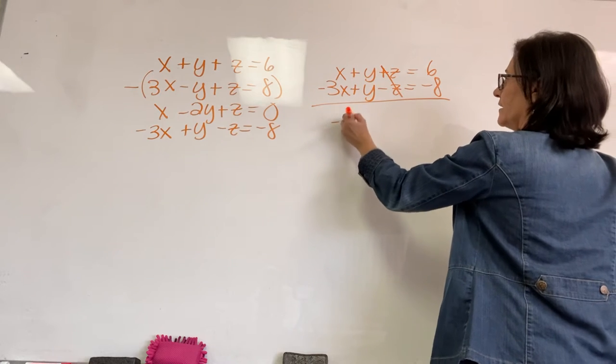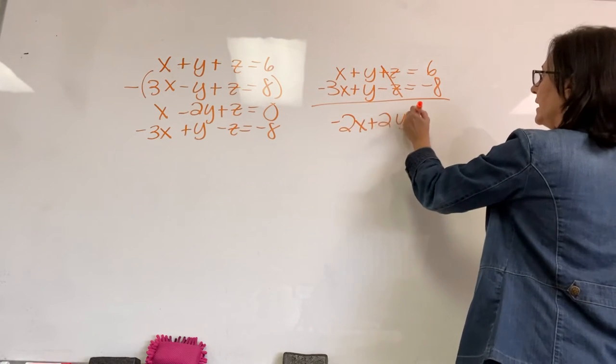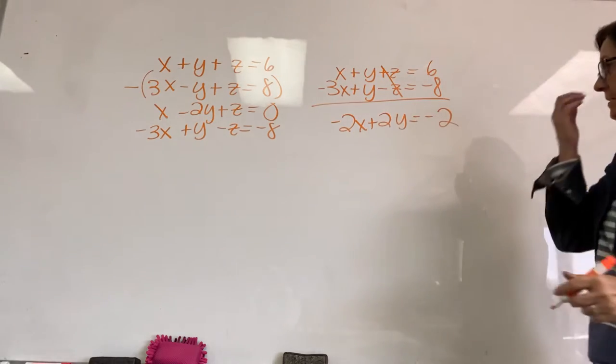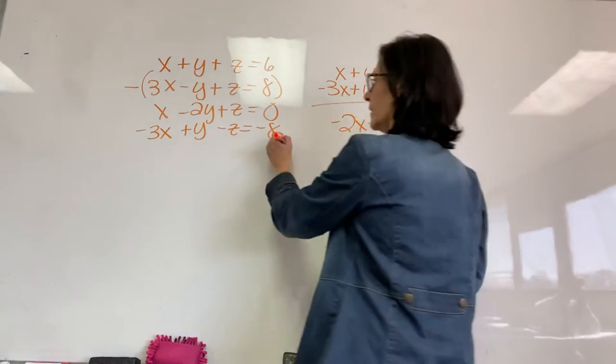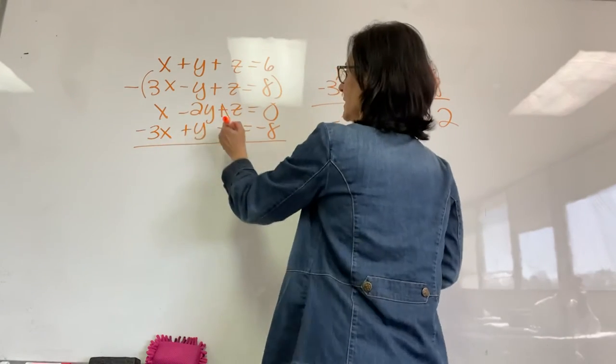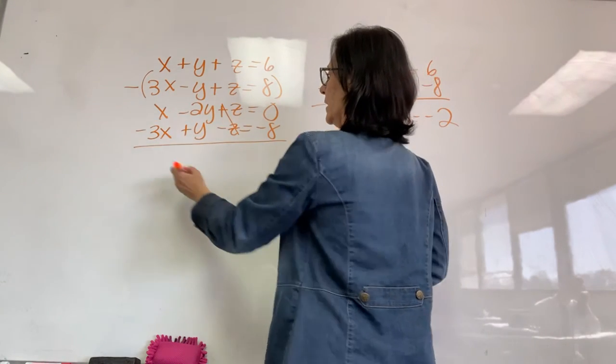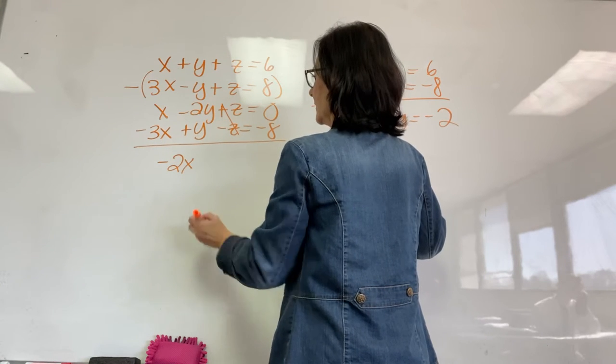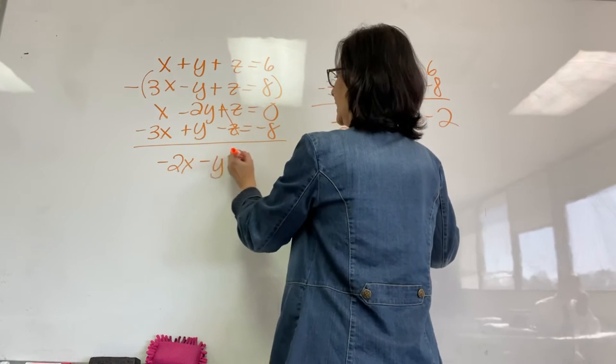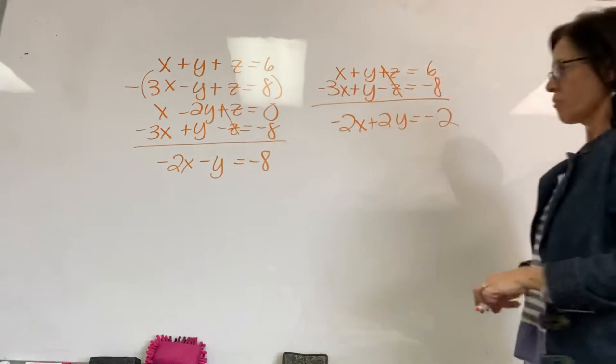I'm left with negative 2X plus 2Y equals negative 2. Boy, that's nice and pretty, isn't it? Everything divisible by 2. This one, our Z's eliminate negative 2X, makes it real nice, minus Y equals negative 8. All right.